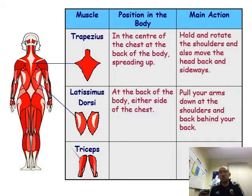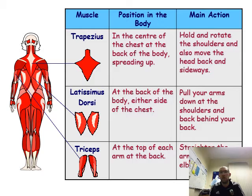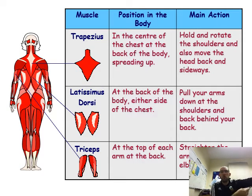The triceps are in the upper arm at the back, and they produce the movement when we straighten our arm.